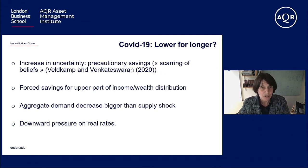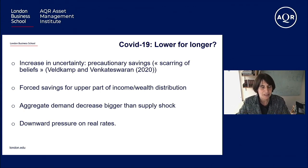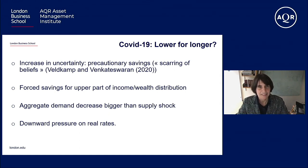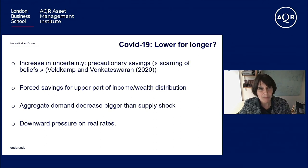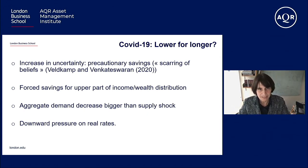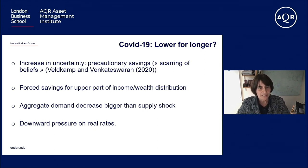This projection does not even take into account COVID-19. Can we expect the COVID-19 shock to push rates even lower for longer? There are several reasons to think so. One important reason is the big increase in uncertainty due to the pandemic, which leads to more precautionary savings — especially if we have a phenomenon called the scarring of beliefs, where people who have experienced a catastrophic shock become more likely to expect such shocks in the future. We also have forced savings, especially from the upper part of the income and wealth distribution due to lockdowns. An aggregate demand decrease due to COVID-19 is also likely bigger than the supply shocks we have experienced. All these factors would put further downward pressure on the real rate.